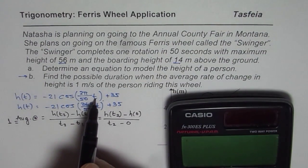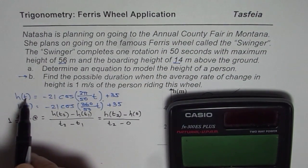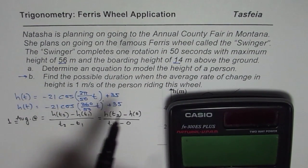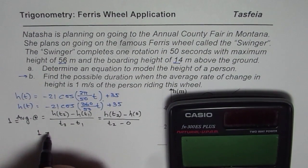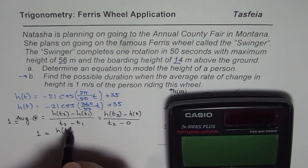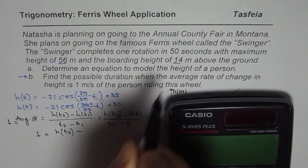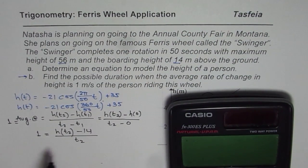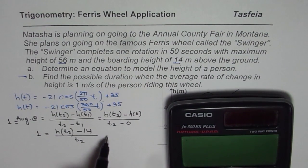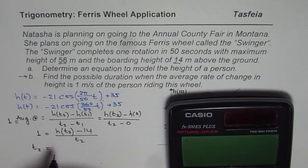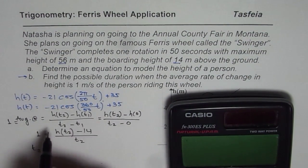When time is 0, we substitute 0 in, and we know it starts from the bare minimum, so the height will be 14 meters. So we have: 1 = (h(t₂) − 14) / t₂. The idea is to find t₂ — the second time — so the duration is from the initial value of 0 to some time when the rate of change is 1. Cross-multiplying, we get t₂ = h(t₂) − 14.